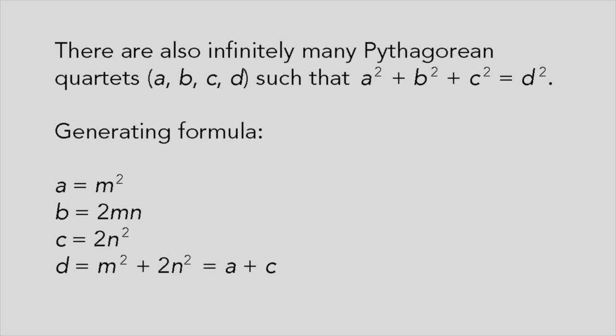When M equals 1 and N equals 1, we get the quartet 1, 2, 2, 3, the simplest example of a Pythagorean quartet.